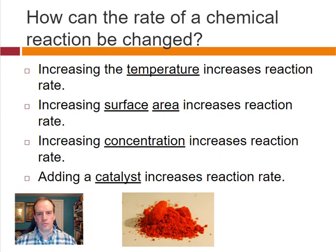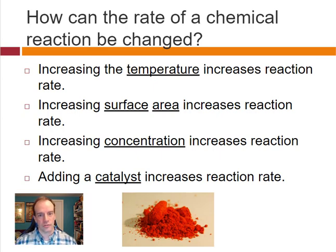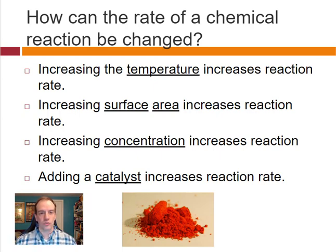How can the rate of chemical reactions be changed? There are four main ways. Mainly we'll talk about increasing the rate, but you can also decrease it by doing the opposite. If we increase the temperature, the reaction rate increases — this makes sense because things move faster when hotter, so there are more collisions and more chemicals hitting each other in just the right way.